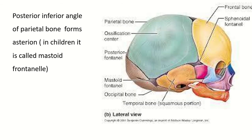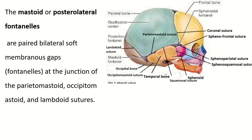The mastoid fontanelle: the posterior-inferior angle of the parietal bone forms the asterion in adults. In children, this is known as the mastoid fontanelle. The mastoid fontanelles are paired bilateral soft membranous gaps at the junction of the parietomastoid suture, occipitomastoid suture, and lambdoid suture.